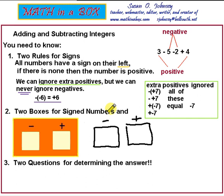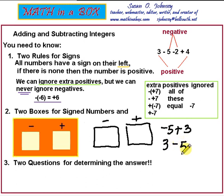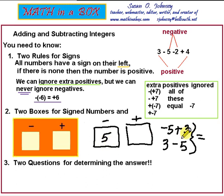Let's look at the problem negative 5 plus 3. From our first step, we learned that this can also be written as 3 minus 5. In both of these expressions, the 5 is negative and the 3 is positive, so they both mean the same thing.